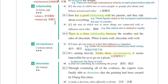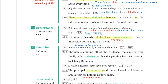动词例句：These figures relate to the company's performance over the last 12 months。这个数据跟公司过去12个月的表现是有关系的。Relate to。形容词例句：She claims she is related to royalty。她宣称她跟贵族是有关联的。Be related to。第十九个单字是circumstance，通常用复数，表示条件、情况。